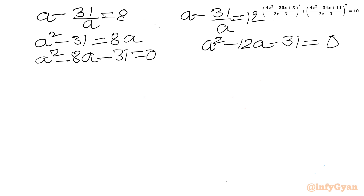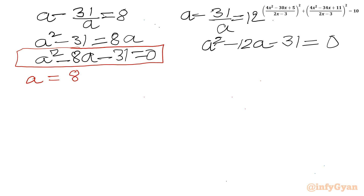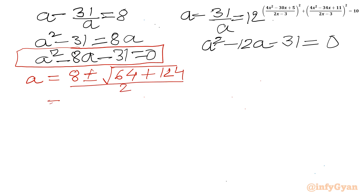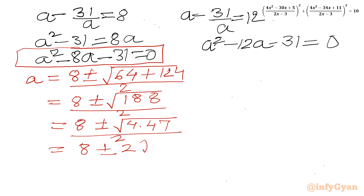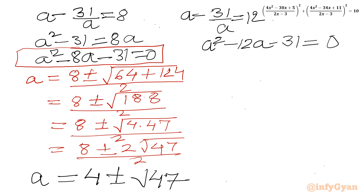Both equations are quadratic, so we will use the quadratic formula. For the first equation, a² minus 8a minus 31 equals 0: a equals (8 ± √(64 + 124))/2 equals (8 ± √188)/2 equals (8 ± 2√47)/2. So a equals 4 ± √47 — two real values.